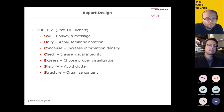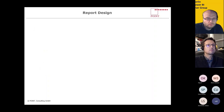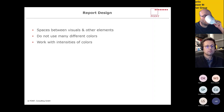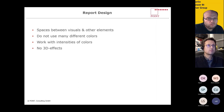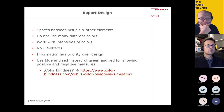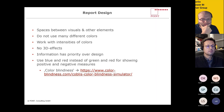In short, what can we do to meet these points? First: use spaces between visuals and other elements — this is the structure point. Do not use many different colors; instead work with intensities of colors. Do not use 3D effects in your visuals. One important point: information has priority over design, because we want to show information to the recipient. And use blue and red instead of green and red for showing positive and negative measures — the topic here is color blindness. Check out colorblindness.com and the colorblindness simulator to see how people with colorblindness see your reports.